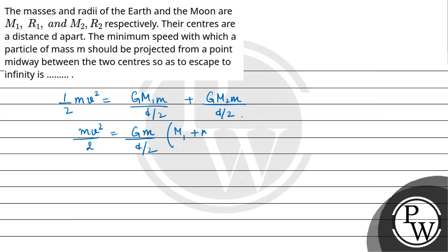M1 plus M2, M will get cancelled. So v square will be equal to 4 G by d M1 plus M2.